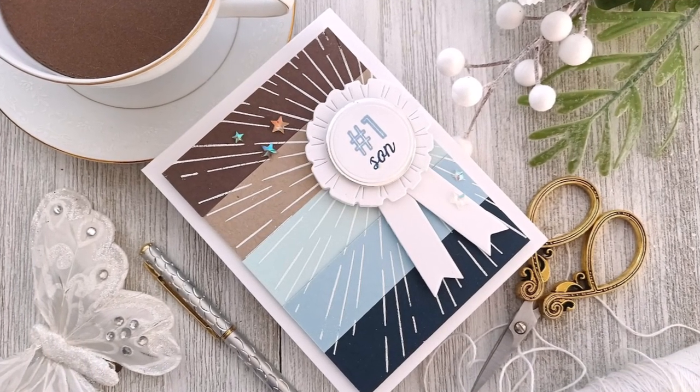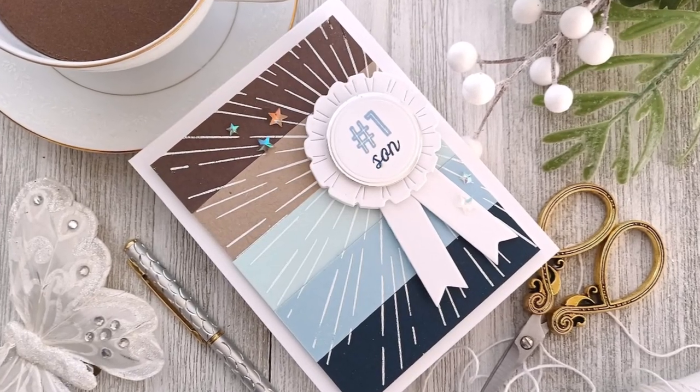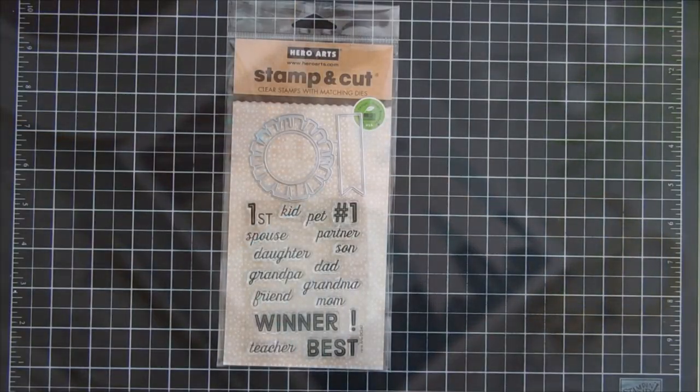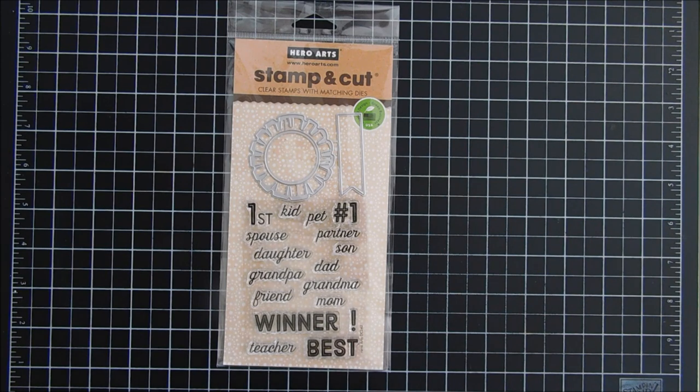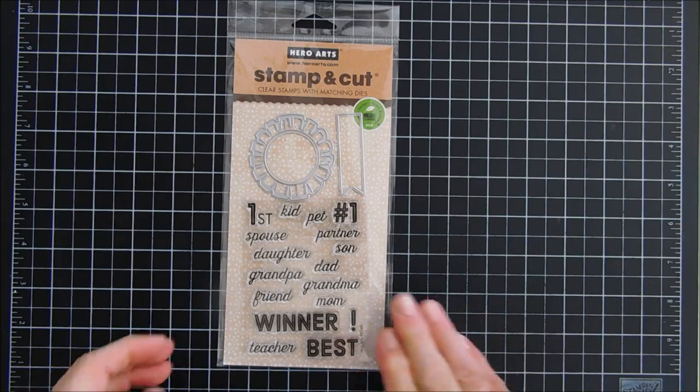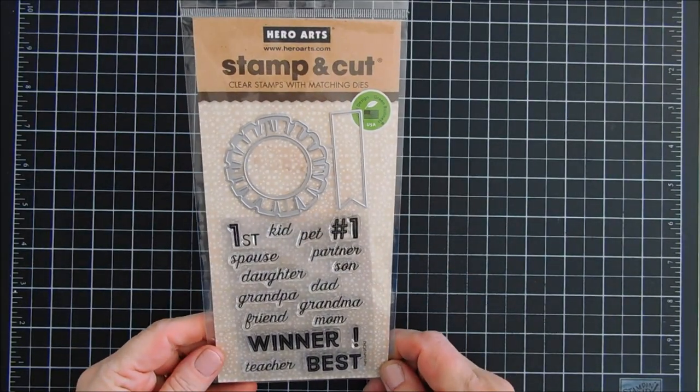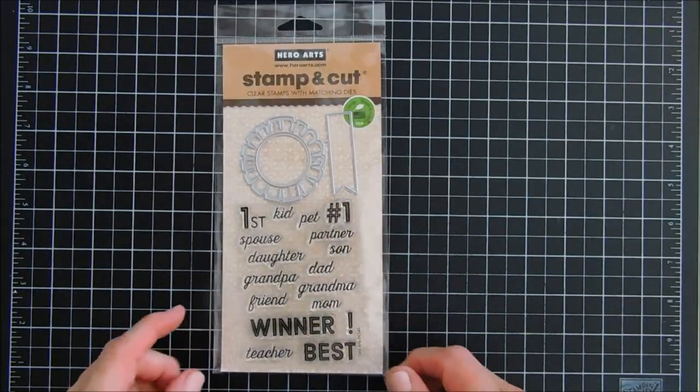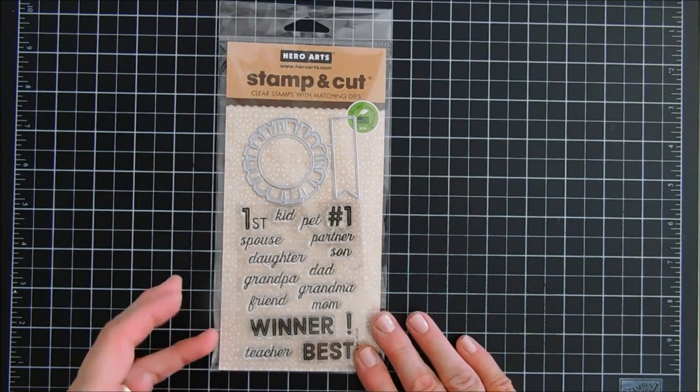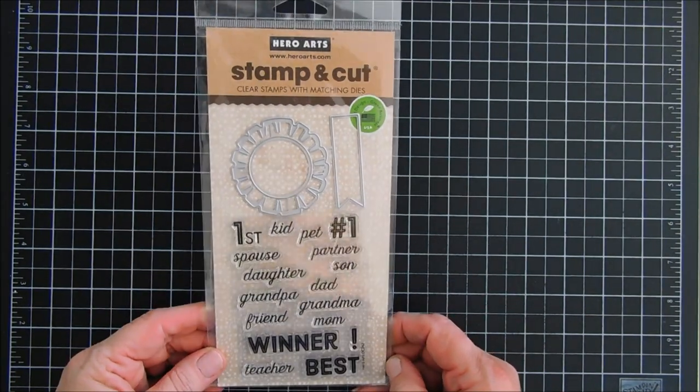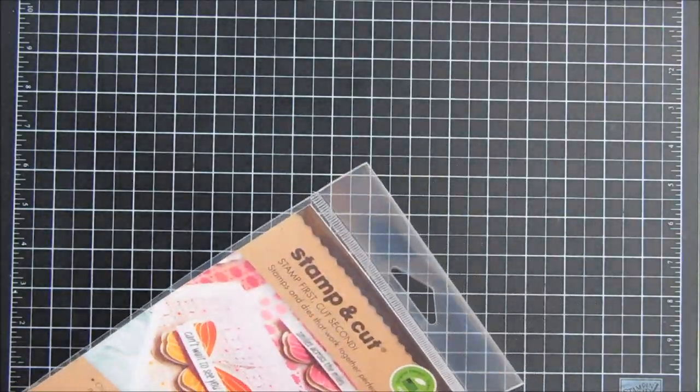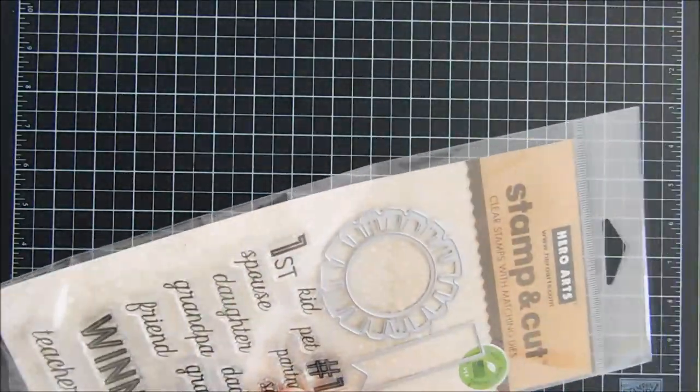Hello everyone, Tina here. I hope you're having a wonderful Tuesday so far. Thank you so much for joining me. Today we're going to create a card using a stamp and cut set from Hero Arts. It's probably been around for a long time, but I just got my hands on it, so I thought we would make a masculine card, great for the guys in our life.